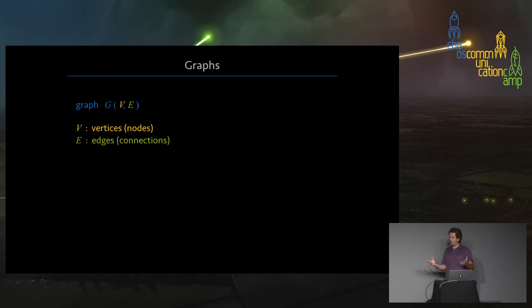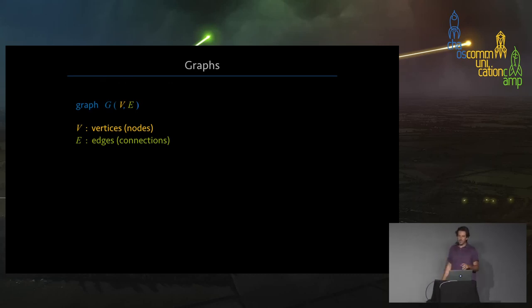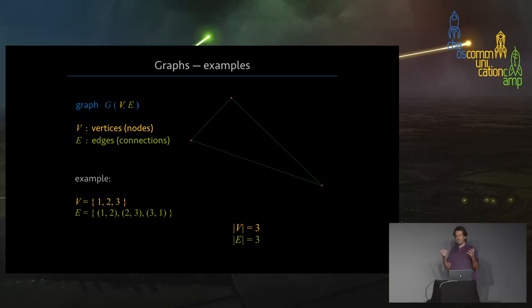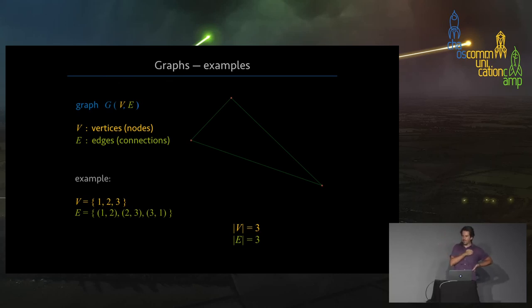In the language of computer science and mathematics, any kind of network can be represented by an object called a graph, which is completely determined by two sets: one is a set of vertices — the things that are connected to each other — and the other is a set of connections or edges. I will be talking about undirected and unweighted graphs. As a very trivial example, here is one simple network with three nodes labeled one to three and three edges connecting them.